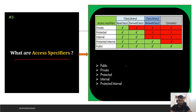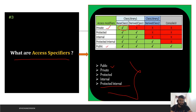The next question is: what are the access specifiers in C#? Access specifiers are used for defining the scope of classes and methods. We have five types: public, private, protected, internal, and protected internal. With private, you can only access the method from within the base class — not from a derived class. With public, you can access it from anywhere, including outside the library in a different project.